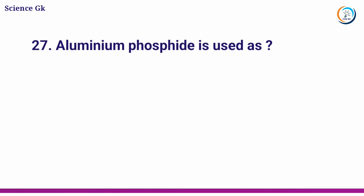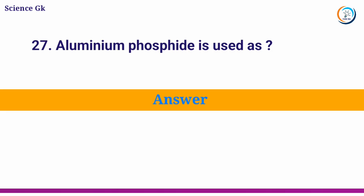Aluminum phosphide is used as? Answer: insecticide.